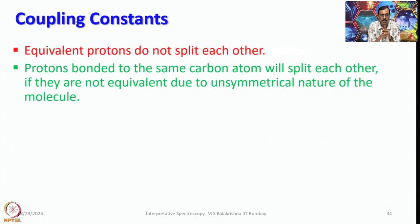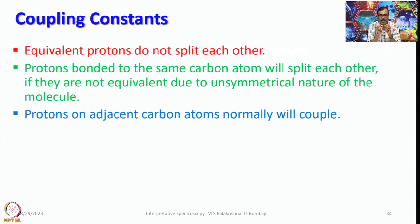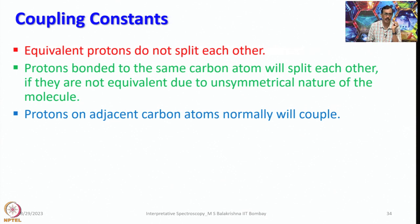The unsymmetry comes into the picture when they are differently substituted on both sides. Protons on adjacent carbon atoms normally will couple most of the time, unless they are separated by atoms such as oxygen, sulfur, or chlorine. In general, protons on adjacent carbon atoms normally will couple.